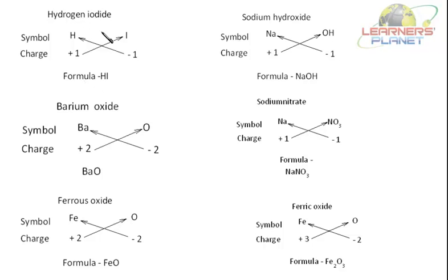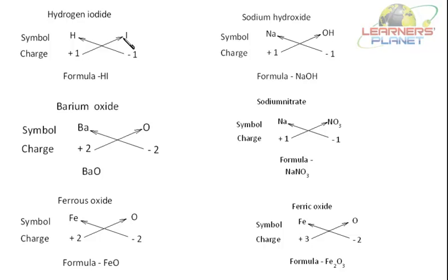Let's take another example: hydrogen iodide. The symbol is H, and the symbol for iodine is I. The valency or charge on hydrogen is plus 1 and iodine is minus 1. Cross placement of charges is done and the formula is derived as HI.